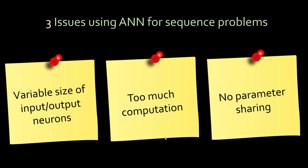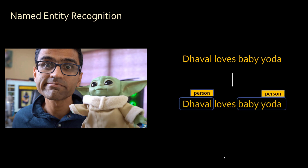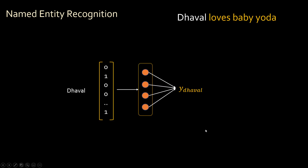These are the three major problems with using ANN for sequence problems. Let's talk about named entity recognition again. Consider the statement: 'The world loves Baby Yoda, I love my baby Grogu, I love Mandalorian series.' In this statement, 'the world' and 'Baby Yoda' are person names. The goal of NER is to find out the entity — 'the world' as a person, 'Baby Yoda' as a person. You represent this as one or zero: if the word is a person name, mark it as 1; otherwise, 0.